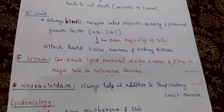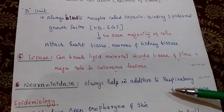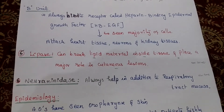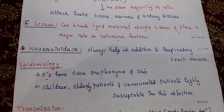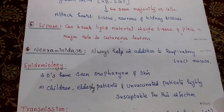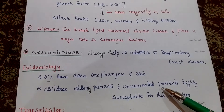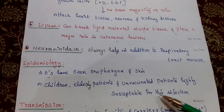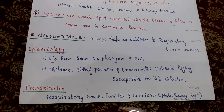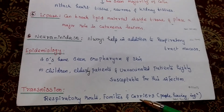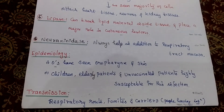The organism also has neuraminidase, an enzyme that aids adhesion to respiratory tract mucosa. Regarding epidemiology, the organism is found in the oropharynx and skin. Children, elderly patients, and unvaccinated individuals are highly susceptible to this infection. Transmission occurs via the respiratory route, fomites, and carriers — infected people can spread the organism easily to others.